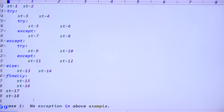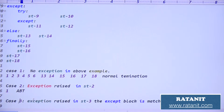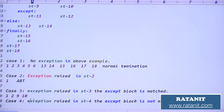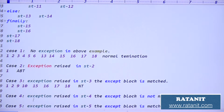So the output for case three is: 1, 2, then 9, 10 (outer except), then 15, 16 (finally), then 17 and 18 (rest of application). Normal termination. Good.